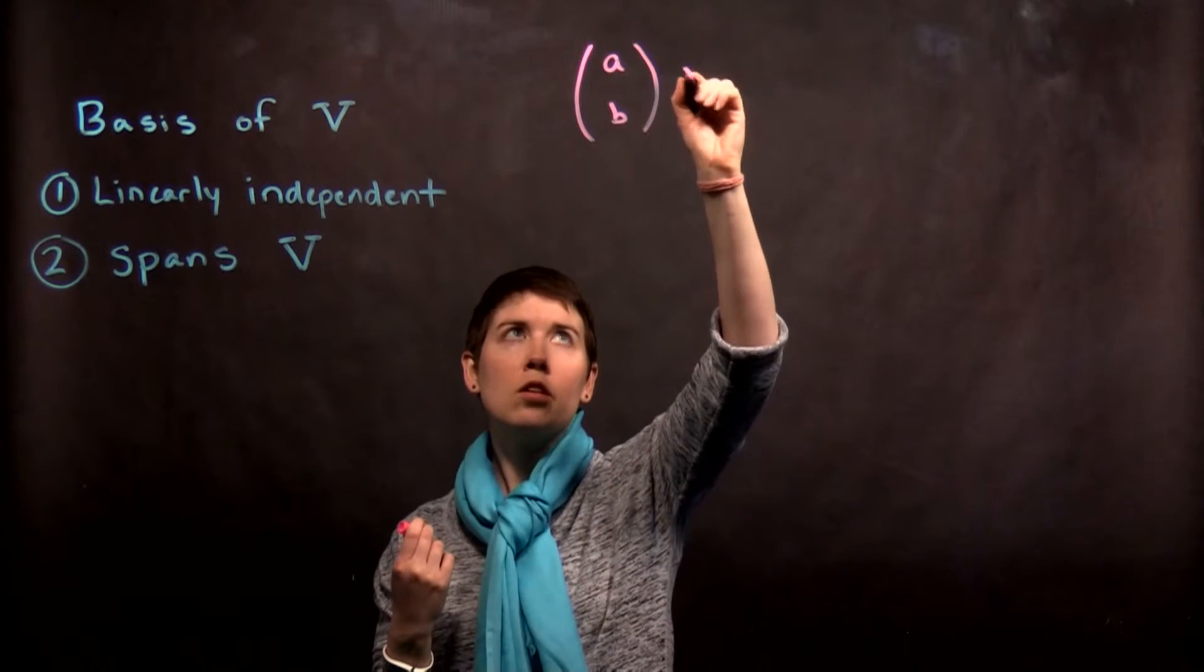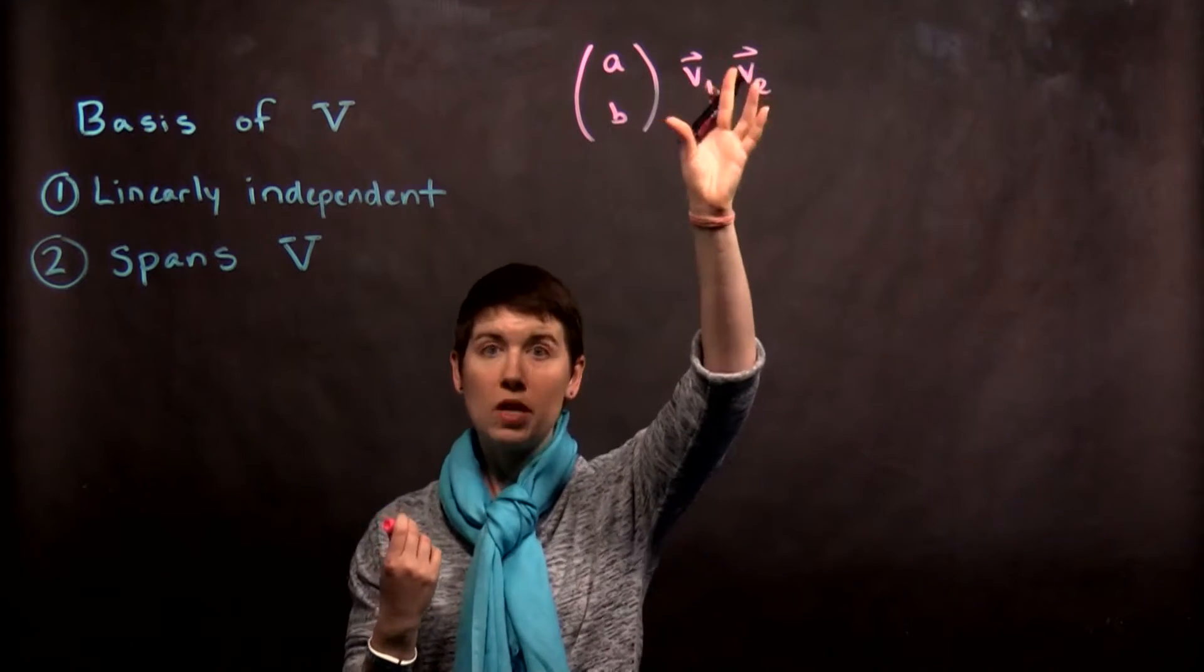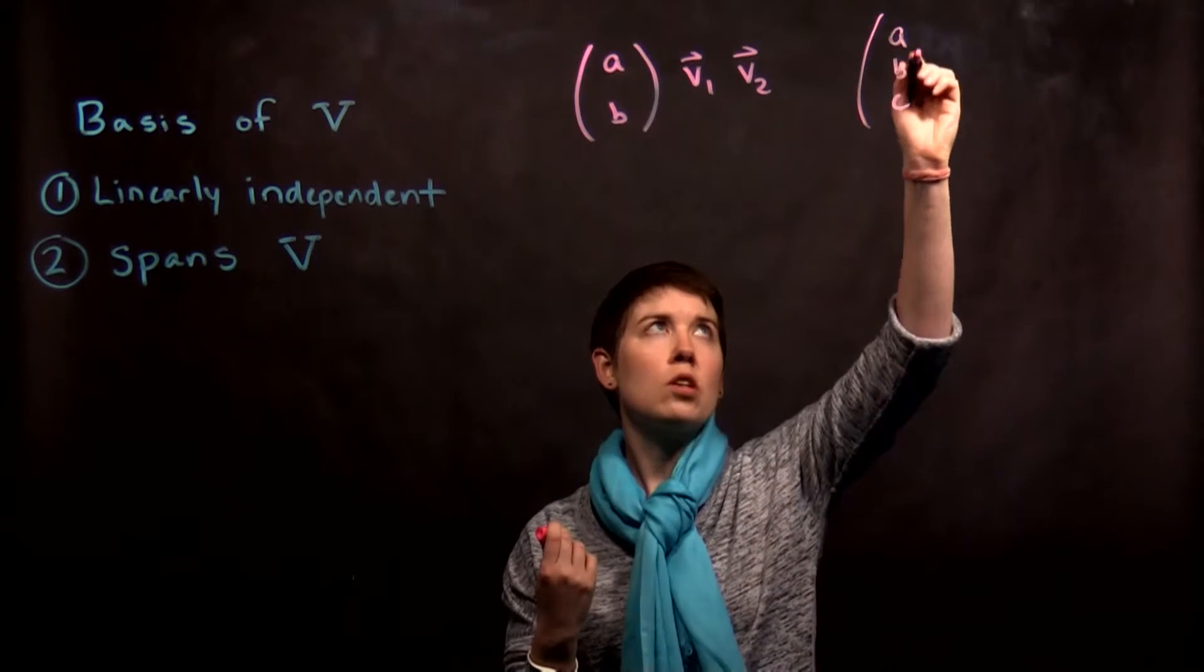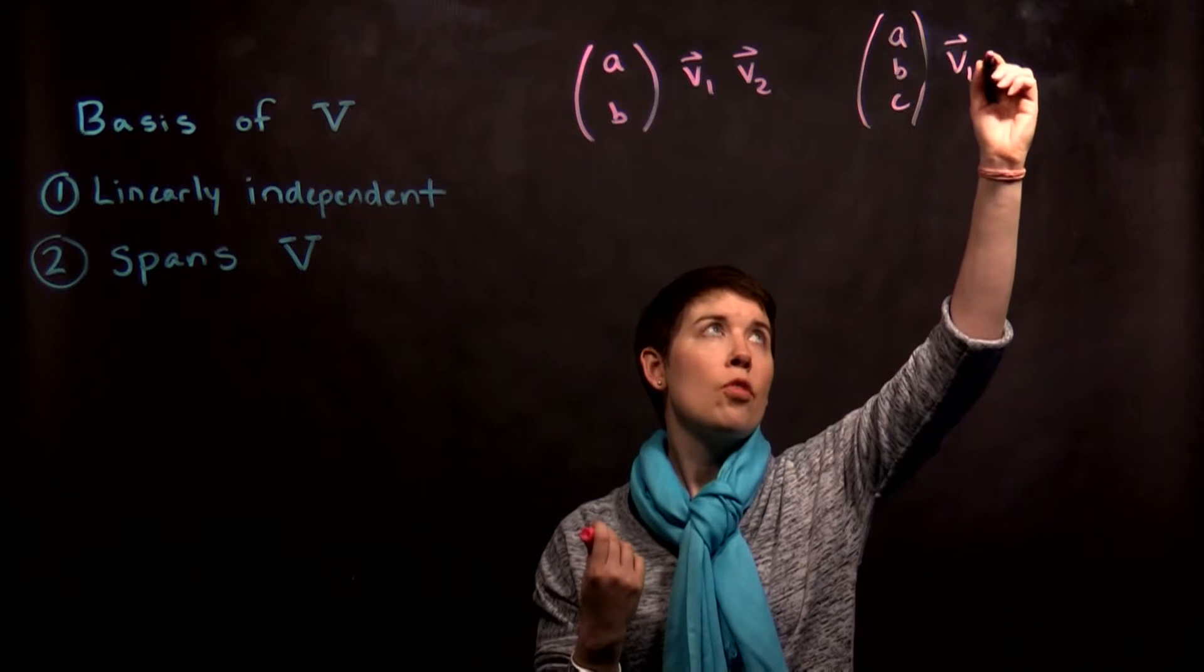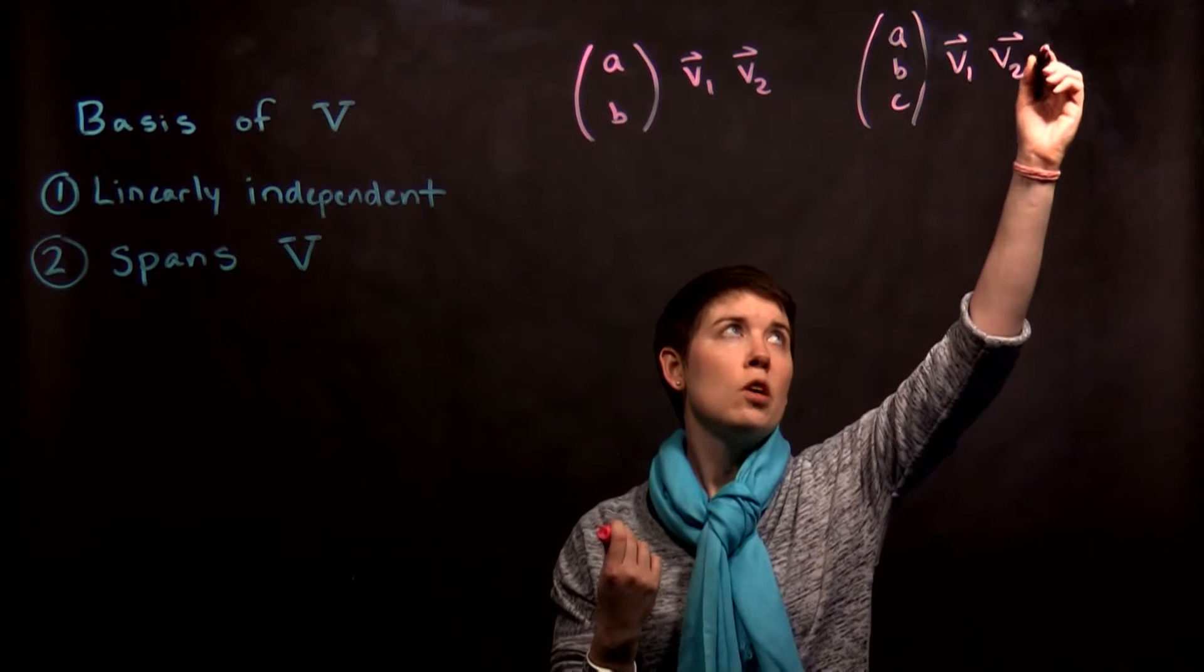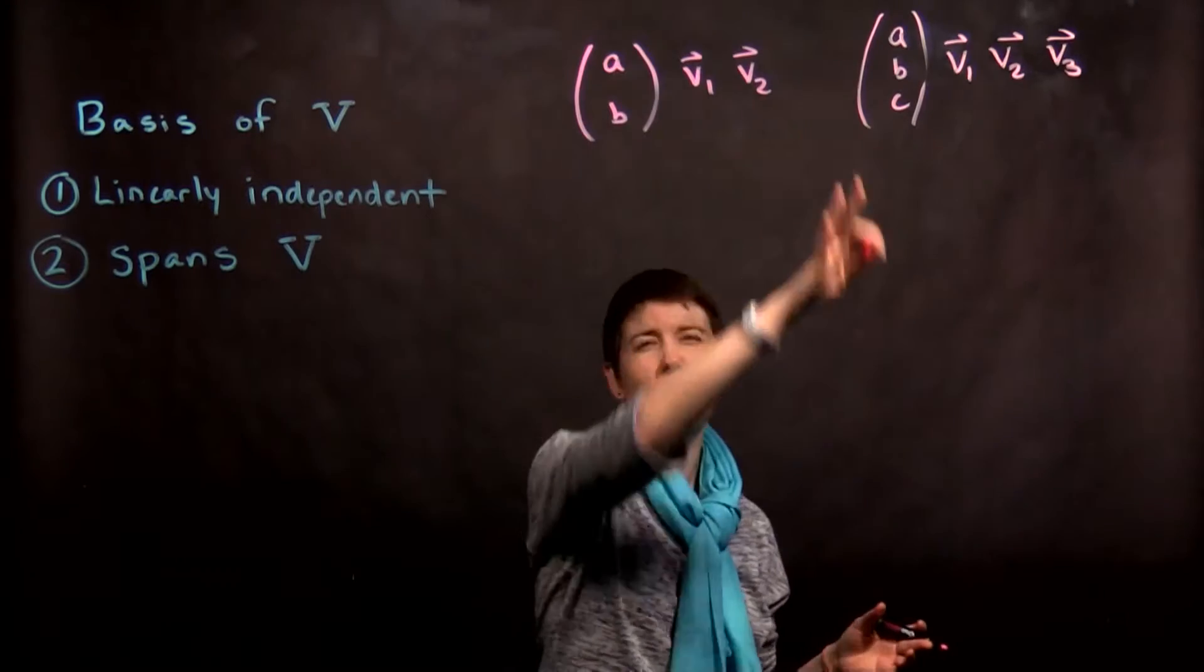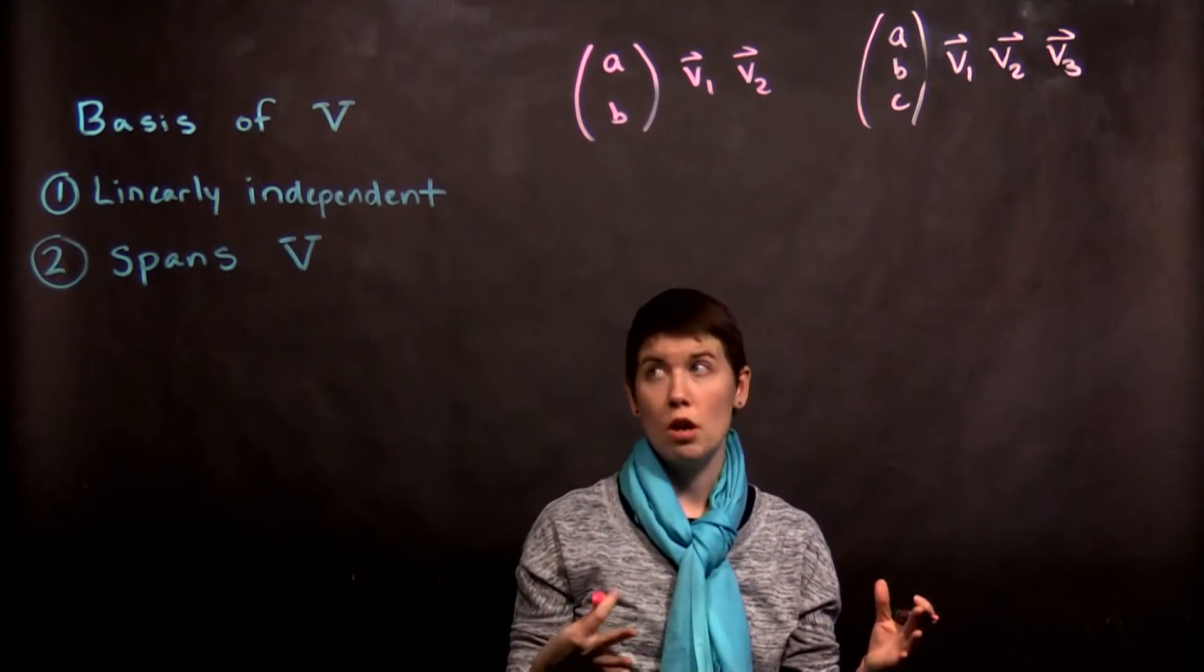We would then need to have two vectors to span this space. If our vector space is comprised of vectors that look like this, we would in fact need three vectors to span the space. So in general, when we're talking about vectors the number of elements is going to tell you how many basis vectors there are.